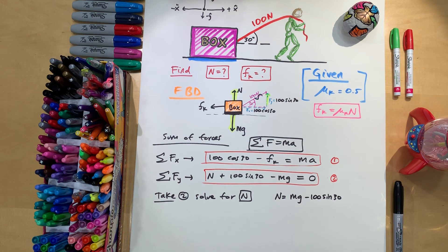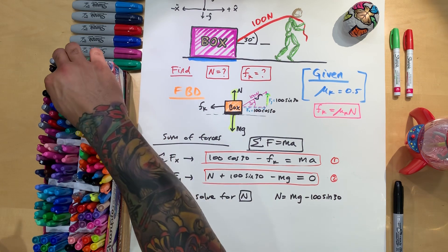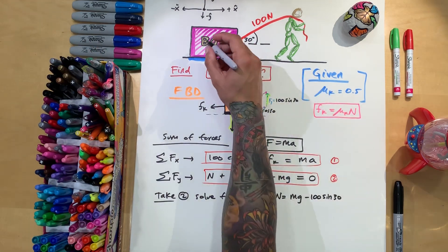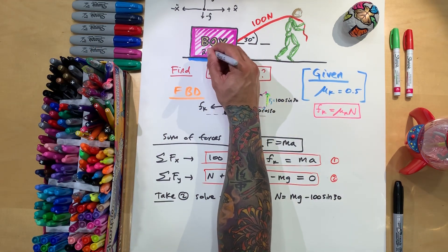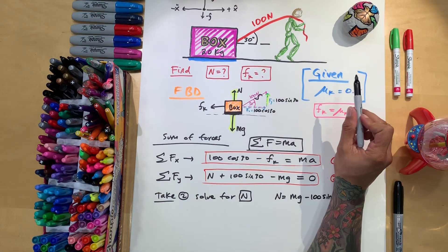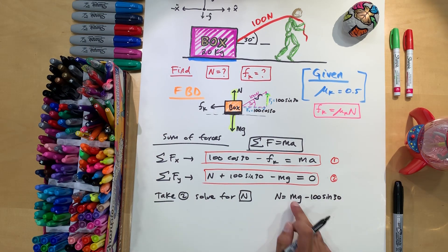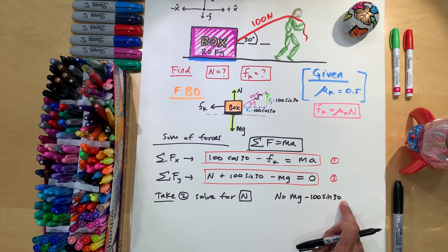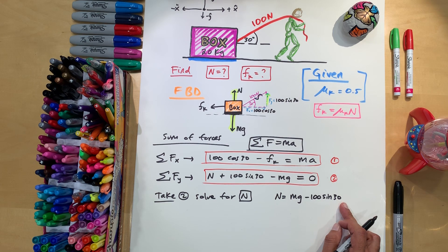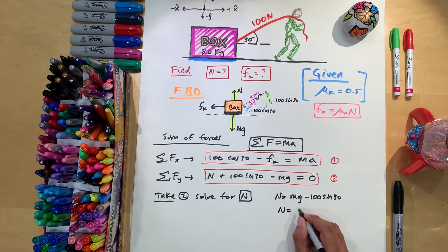We have everything we need. We have the mass. Or do we not have the mass? Oh, okay, sorry, the mass was given to us. I forgot to write it down like an idiot. 20 kilograms. So yeah, that's my fault. So we have the mass. We have gravity. We know gravity. 100 and sine of 30. Perfect. So now let's plug in all the values here. Put it in your calculator, and you should get 146 newtons.